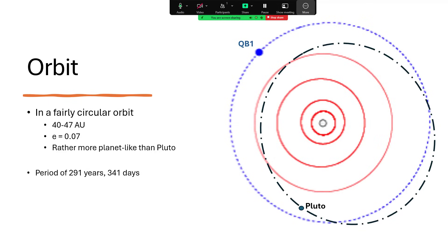You can see in the diagram the red lines are Jupiter, Saturn, Uranus, and Neptune's orbits. The black line with the dashes, that's Pluto, and QB1 is marked with the blue orbit going around. That's interesting because the orbit varies.